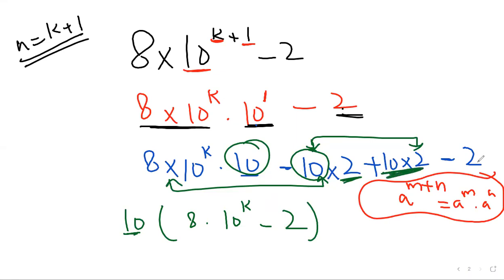10 into 2, 20 positive and minus 2. 10 into 2, 20 minus 2. What will it be? It will be 18, and 18 is definitely divisible by 6.